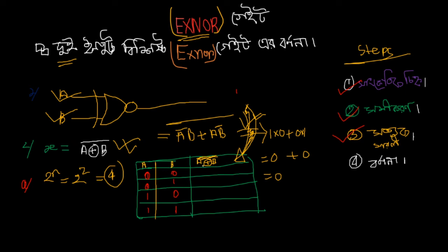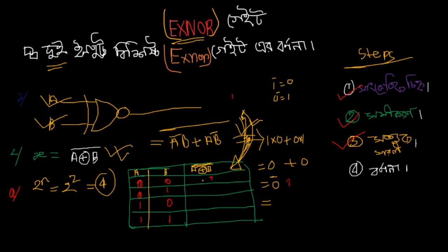The X-OR gives us 0 plus 0, which equals 0. Then we take the complement. The complement of 0 is 1. So the output is 1 when both inputs are the same.